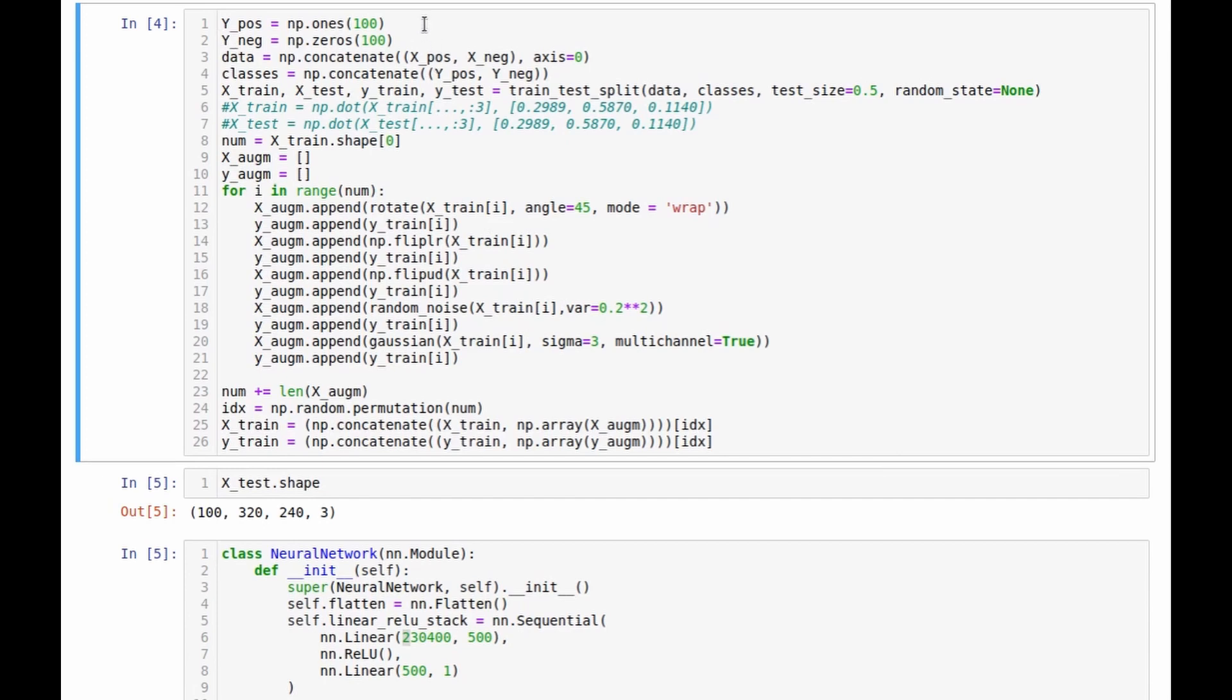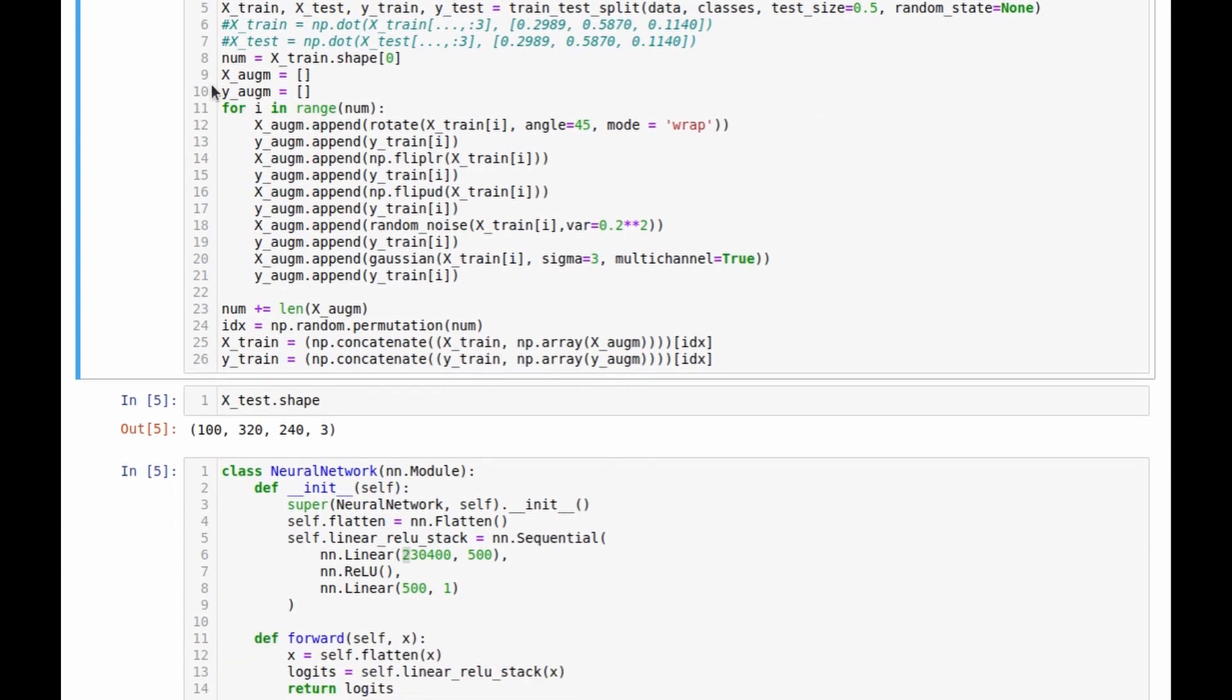Then I prepared labels for the classes, and randomly split the whole data set into train and test parts. Both train and test data sets have 100 images. It's not very much, so I've decided to use image augmentation techniques to enlarge train data set a little bit.